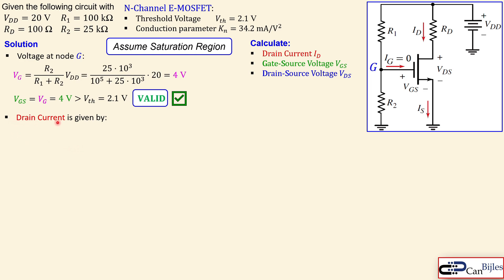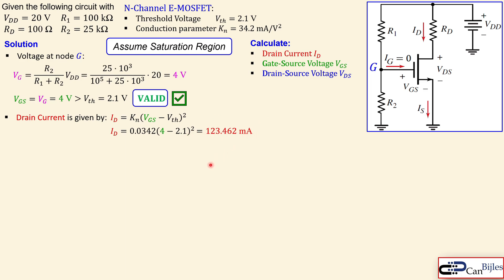The next step is the drain current, given by the square-law expression. You can see the square relationship between VGS and the drain current ID. The formula uses the MOSFET parameters KN, the threshold voltage, and VGS. Substituting the values — KN = 34.2 mA/V² and VGS = 4 V — we get ID = 123.462 milliamps. I give this accurate value so we can verify it exactly in the simulator.